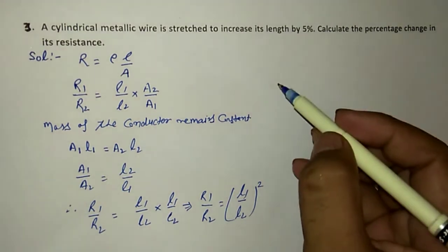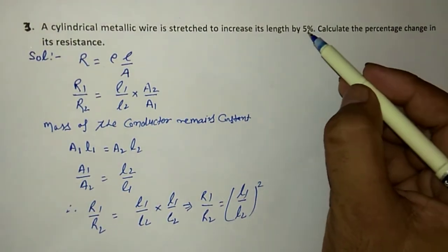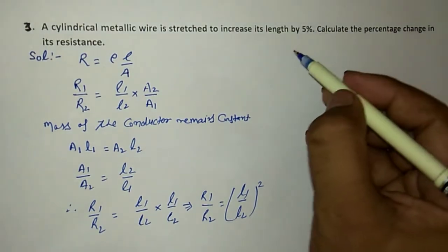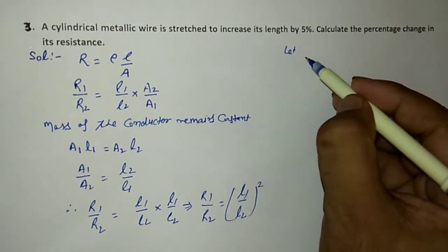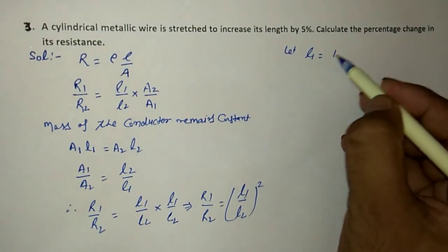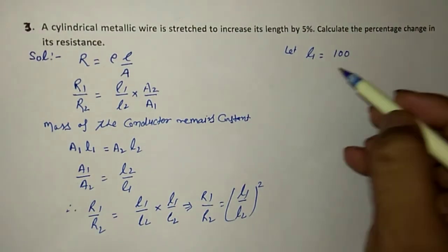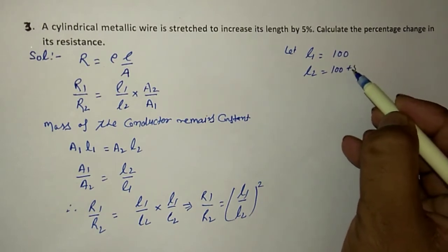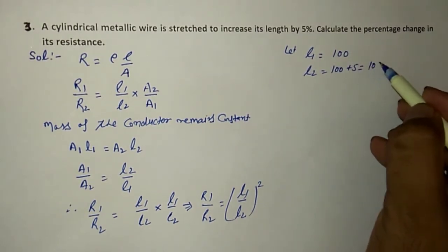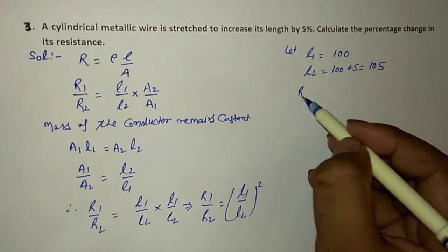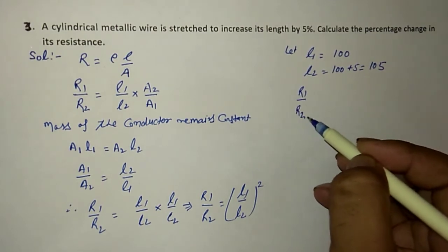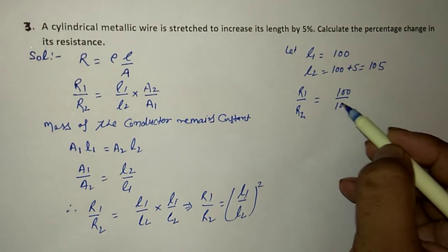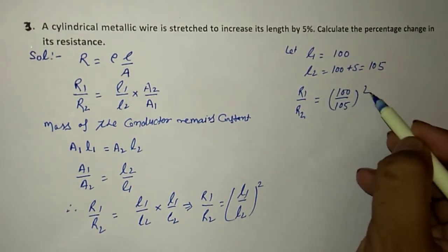Now, the length is increased by 5%. Let initial length L1 = 100, then L2 = 100 + 5 = 105. By putting the values, R1/R2 = (100/105)².